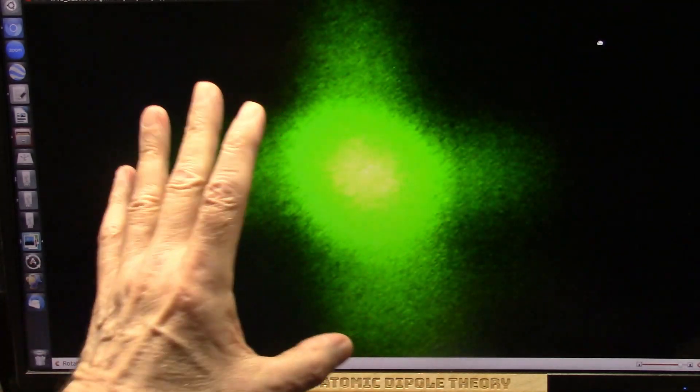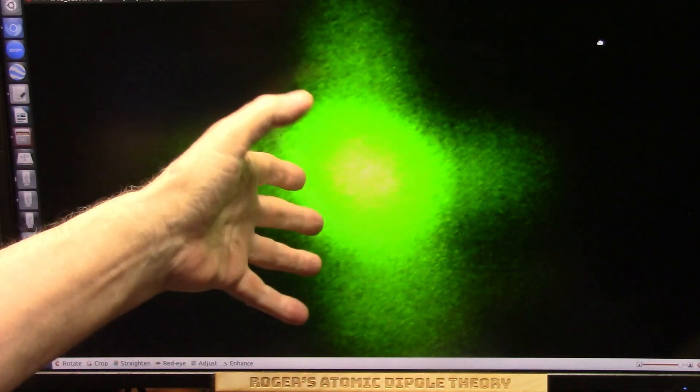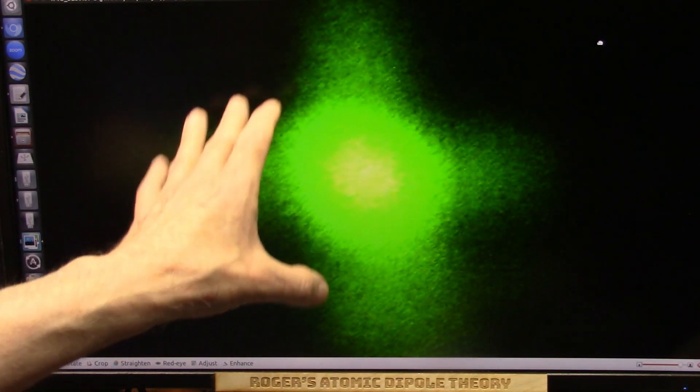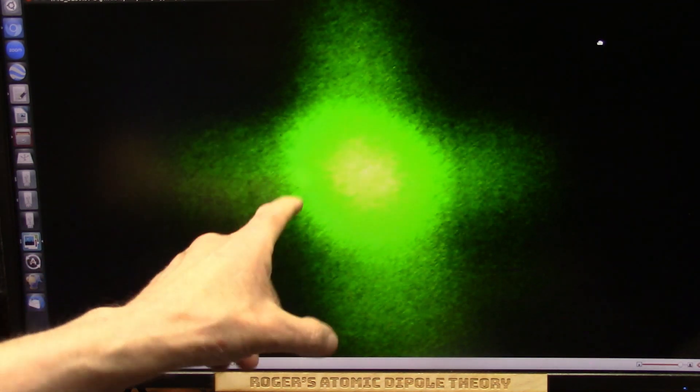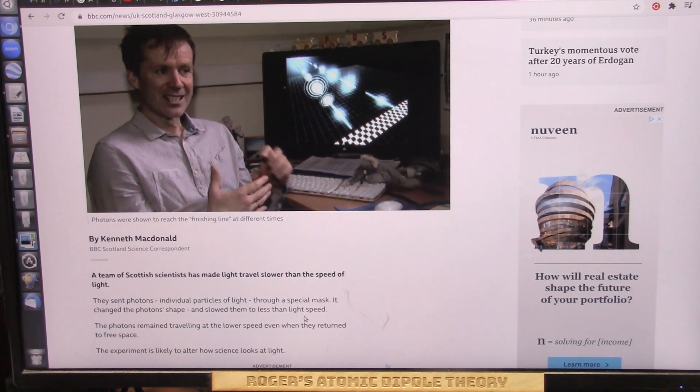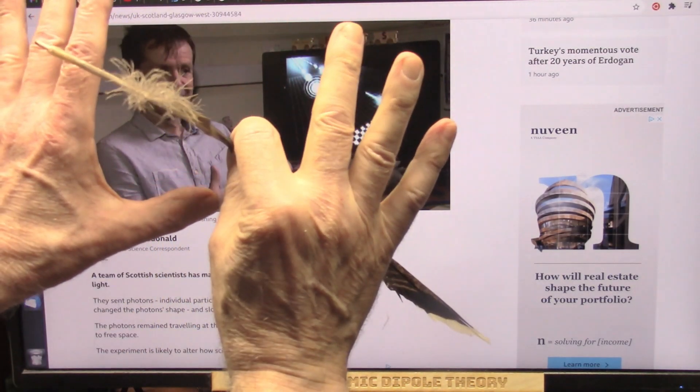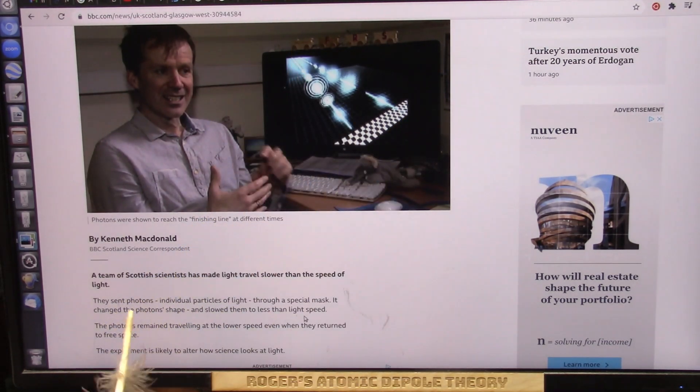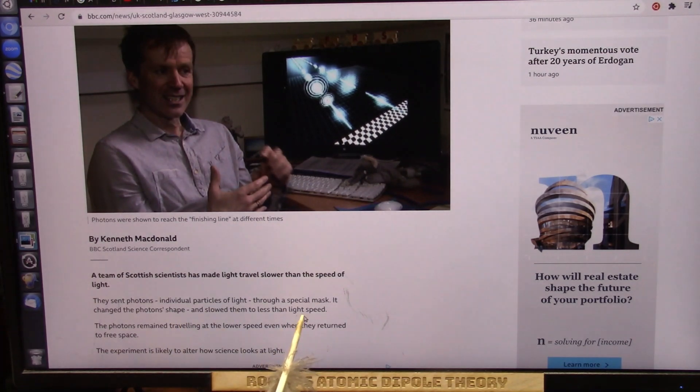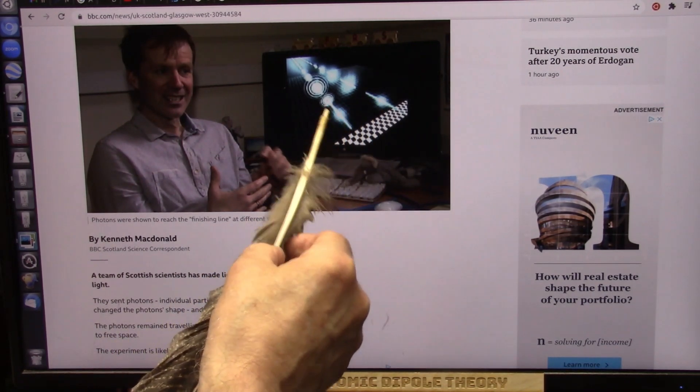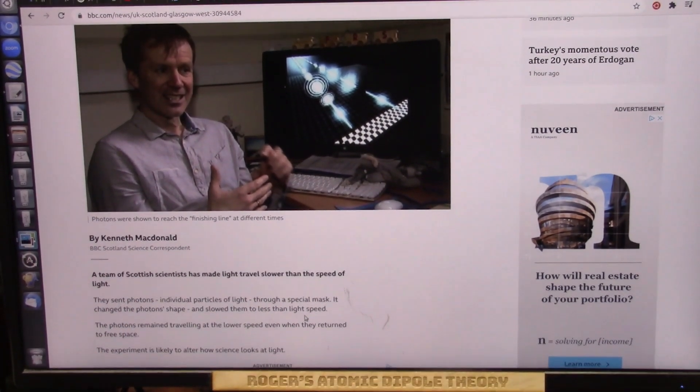Okay. What they did is, the Scottish researchers, is they put a mask in front, so it sort of filters the light through and opposes it. They say the photons changed shape, and then they stayed in this slower phase after they came through. Well, they went back to looking like normal light, but they didn't speed up. The only reason they changed shape is because they're stacking up against themselves prior to hitting the mask. They changed the photon shape, and it slowed them down. The photons remain going slower even when they return to free space. That's what the redshift is.